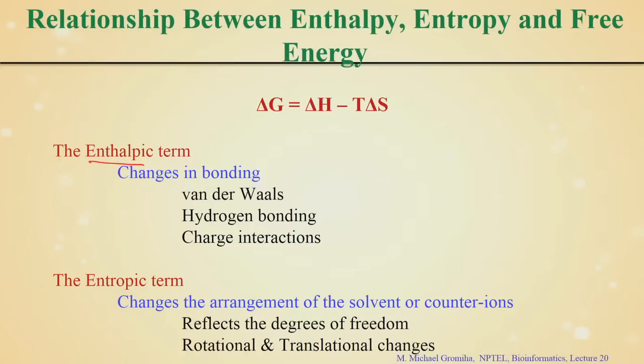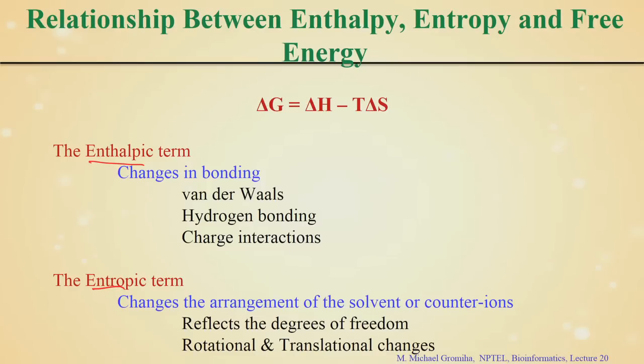To interpret delta H and T delta S to get the value of delta G: for the enthalpy term, the changes are mainly in bonding energy and non-covalent interactions like van der Waals energy, hydrophobic energy, hydrogen bonds, and charge interactions. For the entropic term, you consider the arrangement of solvents, rotational degrees of freedom, translational changes — these account for the entropy of the system.